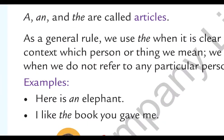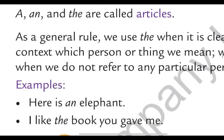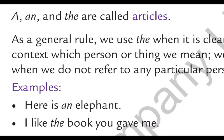Examples: 'Here is an elephant.' 'I like the book you gave me.' In these two examples, we identify the articles first. In the first sentence, 'an' is the article; in the second sentence, 'the' is the article. 'Here is an elephant' means any elephant — not a particular, not a specific elephant, just any elephant — koi sa bhi haathi. 'I like the book you gave me' — yahan par ek khaas particular ya specific book ke baare mein baat ki ja rahi hai, wohi book jo tumne mujhe di thi.